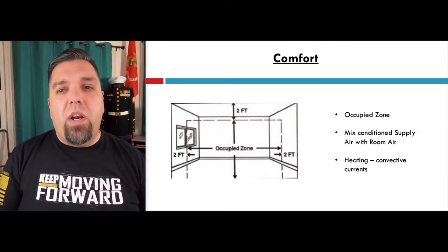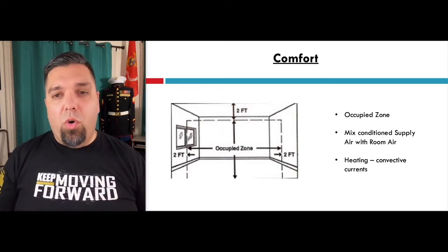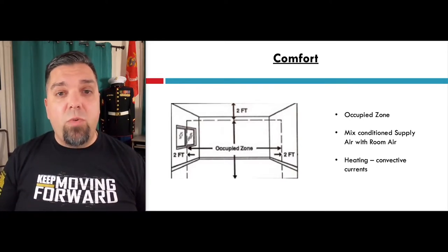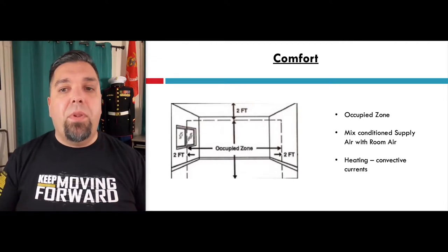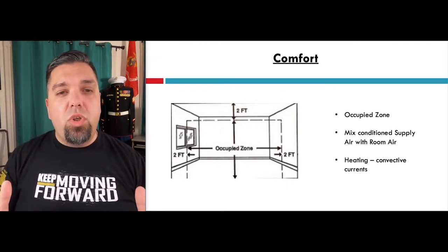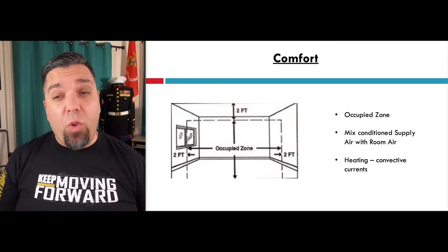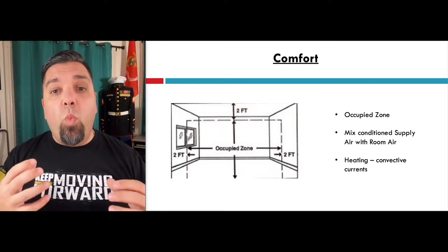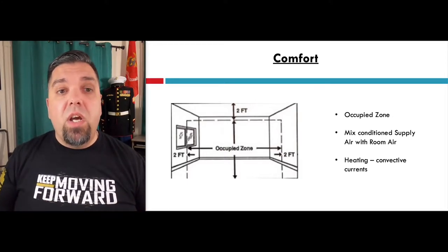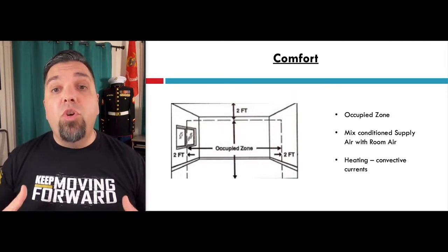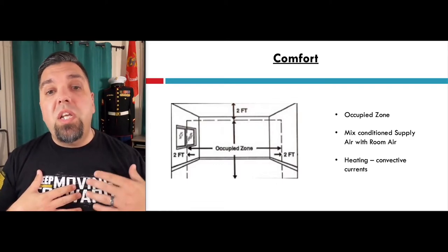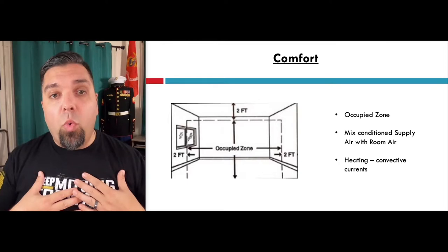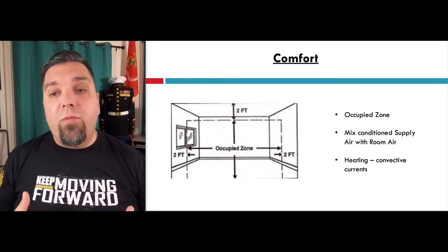Let's talk about comfort. When you're comfortable in a home, you're not within two feet of a wall, and this is because of what's called radiant asymmetry. All of the mixing and conditioning of supply air in the room happens at least two feet away from a wall, window, ceiling, and sometimes floor if it's unheated underneath. When you heat a home, there are convective currents moving along cold surfaces. If you're within two feet, regardless of the temperature, you're actually losing radiant heat from your body to that cold wall, ceiling, or floor — and you'll always feel uncomfortable.